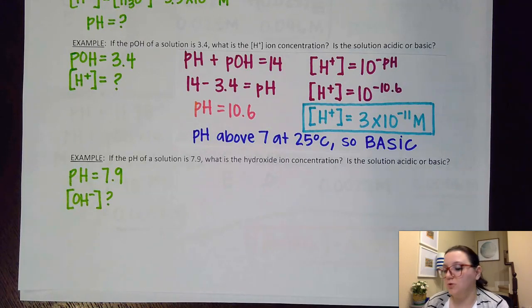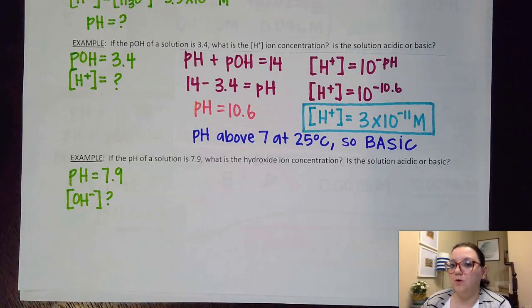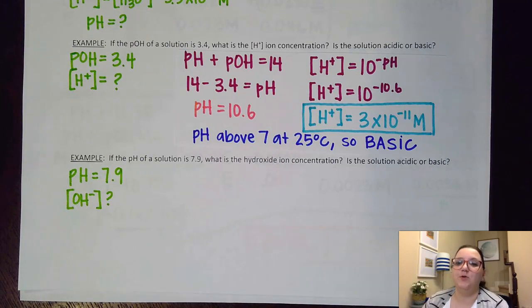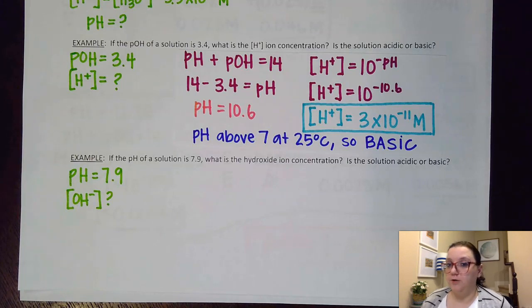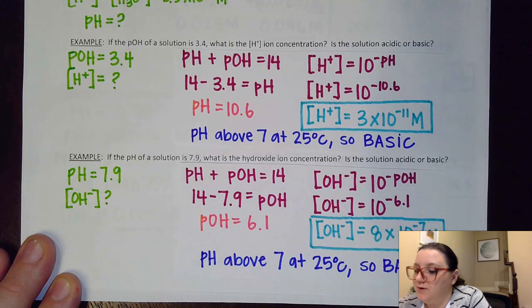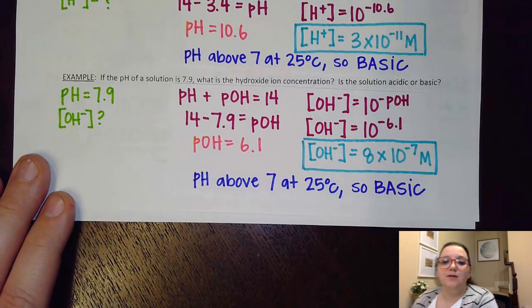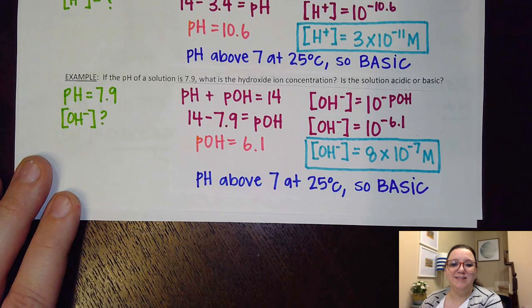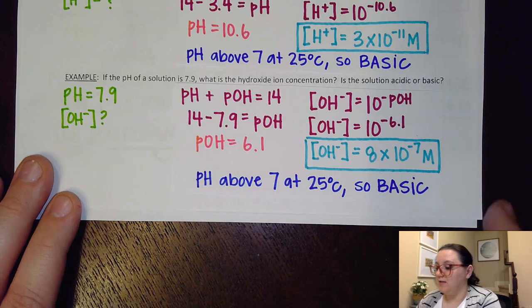I want you to pause the video and see if you can solve the next example. It will also need two formulas. Go ahead, pause it, try it out. All right — did you try it out? Here's what I got. Let me show you so you can see if you match up with mine. With that said, let's look at the next page where we'll talk about doing the same process with strong acids and bases.